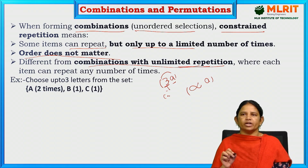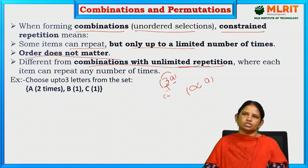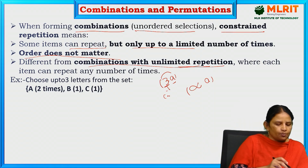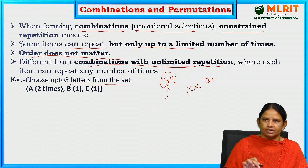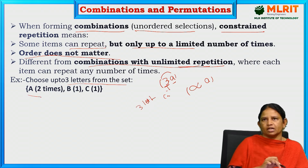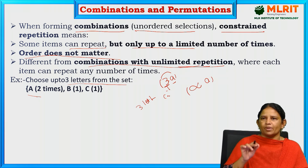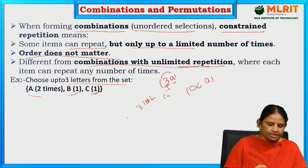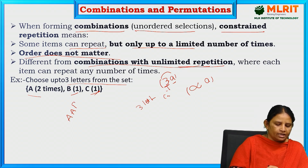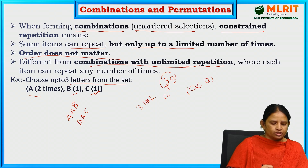In the case of combination, order is not a matter, but in the case of permutation, order is a matter. For example, consider choosing up to 3 letters from a set of 3 letters with constrained repetition: A can be repeated maximum 2 times, B can be repeated only 1 time, and C will be repeated 1 time. So you can write the letters as A, A, B — one combination; A, A, C — one combination; and A, B, C — one combination.